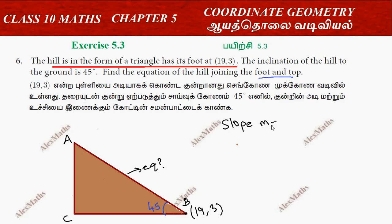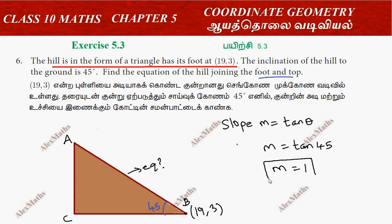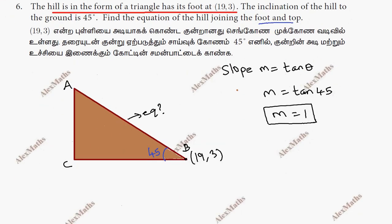Slope m is equal to inclination, which is equal to tan theta. So m is equal to tan 45. Tan 45 is equal to 1. So slope m equals 1, and the point is (x1, y1).